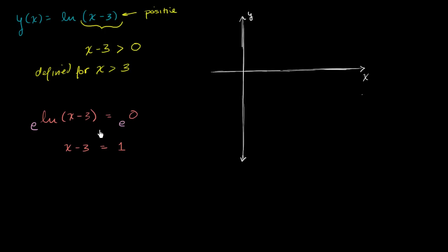This is just another way of saying, if I want to know what exponent do I need to raise e to to get to 0, we know e to the 0th power is equal to 1, so x minus 3 is equal to 1. So if I'm taking the natural log of 1, it'll be 0.